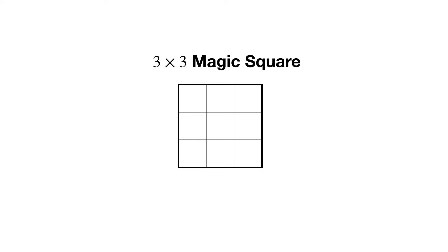This same construction will work for any odd size magic square. Place a 1 in the top middle square and then start traveling diagonally up and to the right. In no time you'll have a magic square.